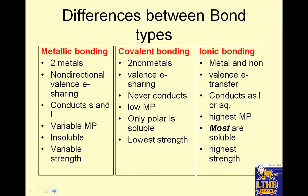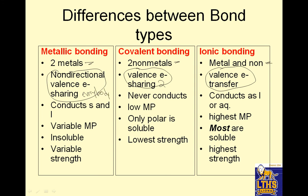Differences between bond types — this is the meat and potatoes of it. Metallic bonding is two metals. Covalent bonding is two nonmetals. Ionic bonding is a metal and a nonmetal. Metallic bonding has non-directional sharing, meaning it shares with lots of them at once. Covalent bonding has valence electron sharing between two things. Ionic bonding has valence electron transfer — this is sharing with everybody, and ionic is transfer between two. Conducts in solid and liquid. Covalent never conducts — no ions.